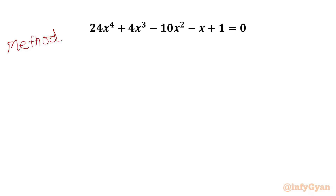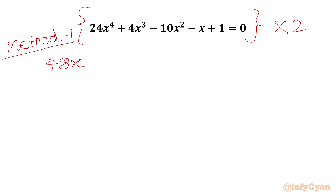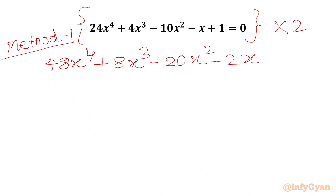In this method, I will multiply our equation by 2 on both sides. So I can write our equation: 24 times 2 is 48. So 48x⁴ plus 4 times 2 is 8, so 8x³, 10 times 2 is 20, so minus 20x² minus 2x plus 2 equal to 0.